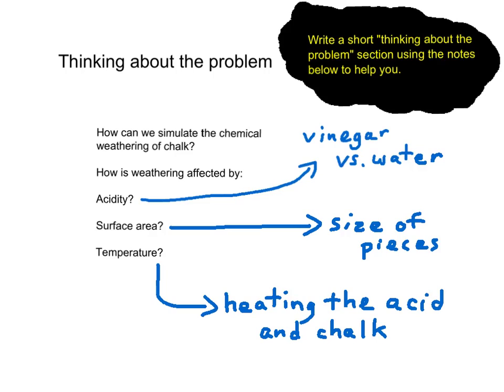The problem is how can we simulate the chemical weathering of chalk, and we're going to look at three different factors. We're going to look at how weathering is affected by acidity by comparing vinegar and water. Then we're going to look at the effect of surface area on weathering by comparing chalk pieces of different sizes. And then we're going to investigate the effect of temperature on chemical weathering by using acid and chalk at two different temperatures.